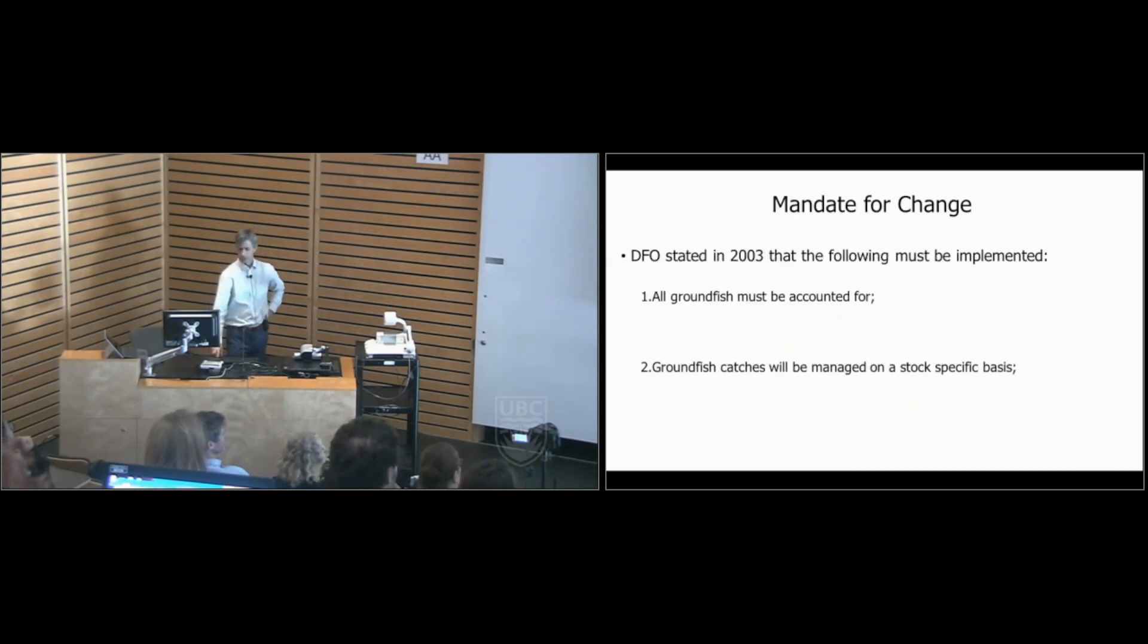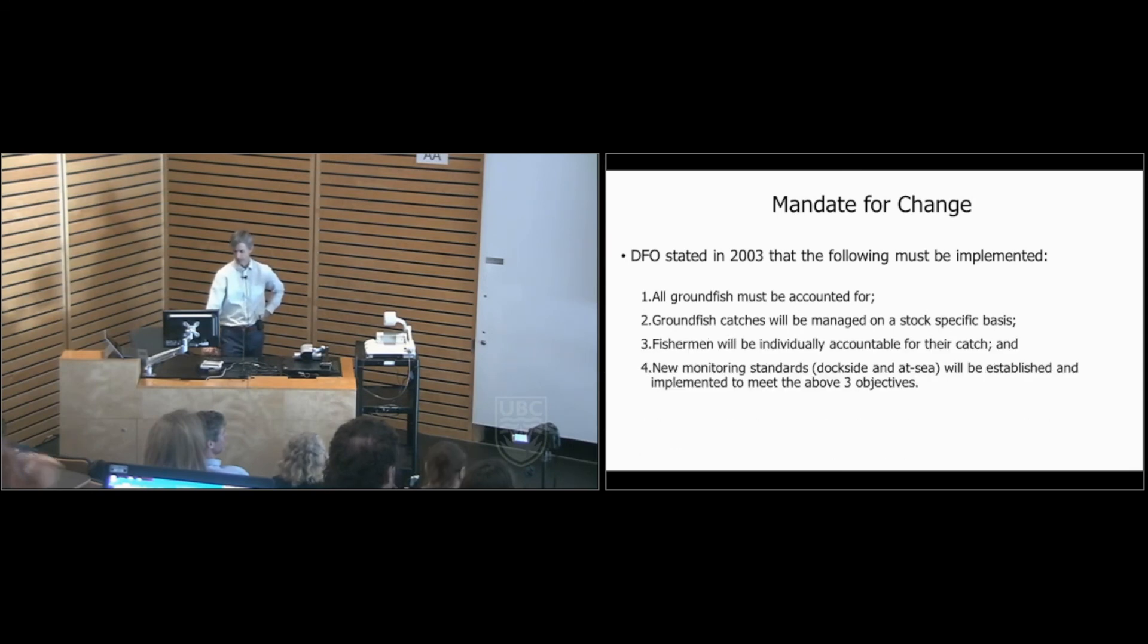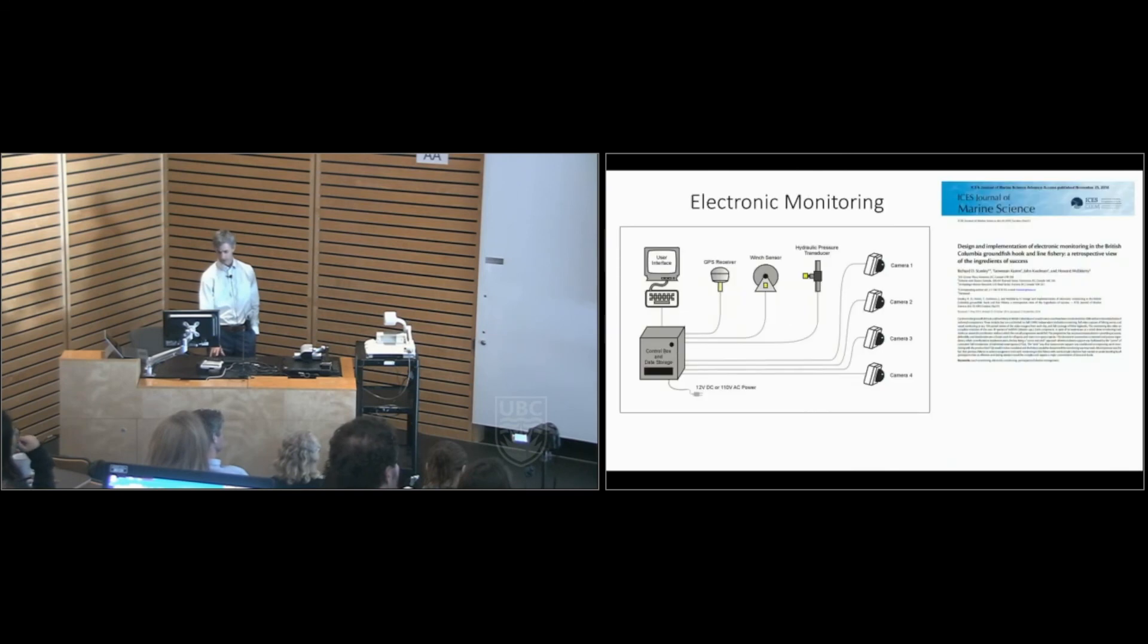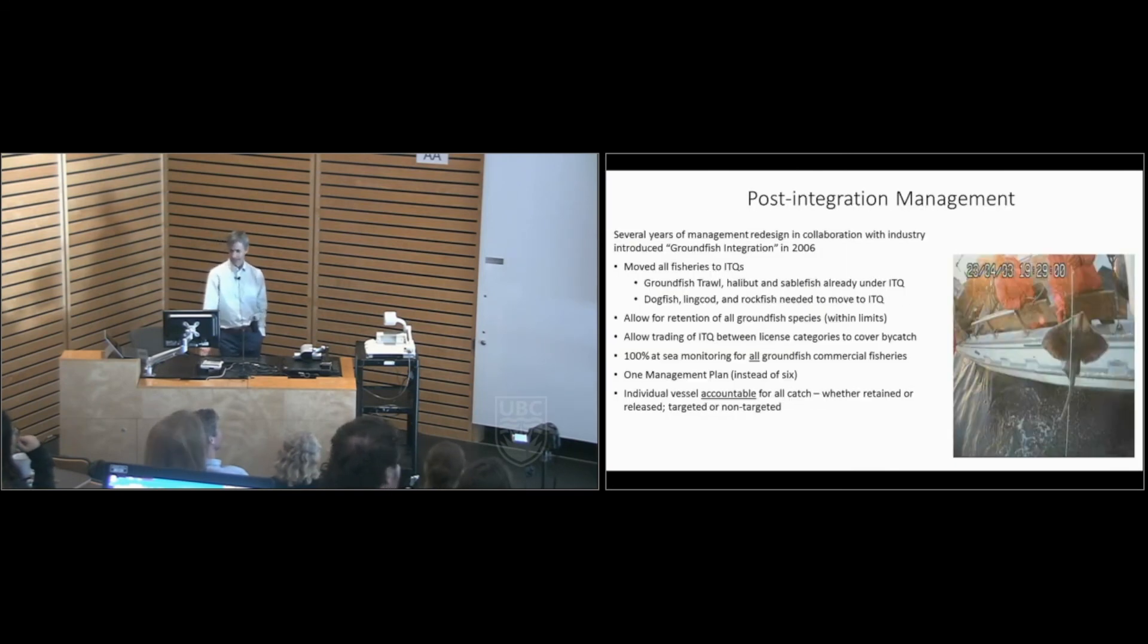So in 2003, we said we got to change. We set out some principles that would need to be met if we were to adjust the management system for all of these fisheries: that all groundfish catch must be accounted for. And we're going to manage those species on a stock-specific basis. And we're going to make fishermen individually accountable for their catch and introduce some new monitoring standards so we have more confidence in the catch information. So as a result, after about three years of negotiations and consultations between the department and industry, we ended up with a system where all of those seven fisheries essentially moved to individual transferable quota management.